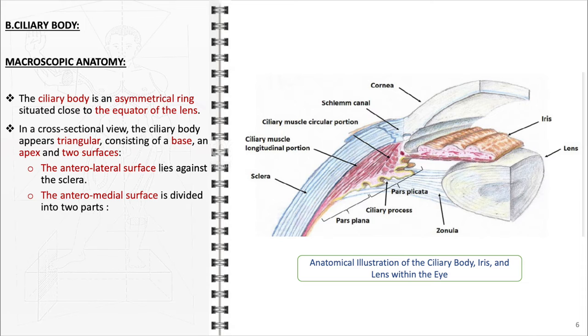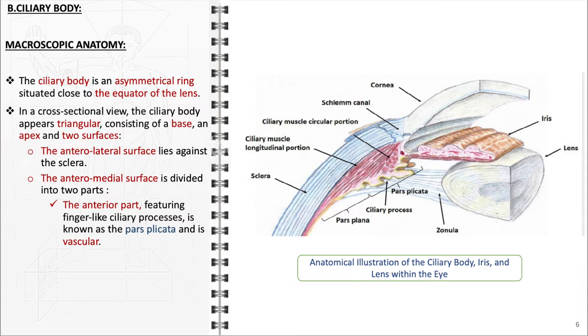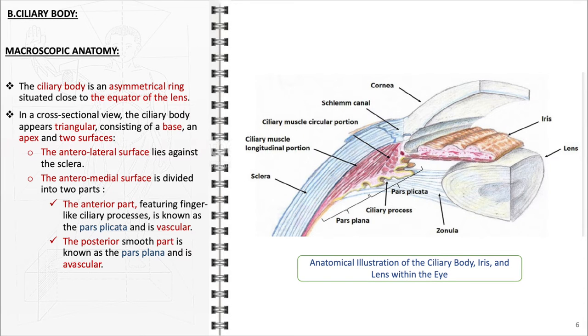The anteromedial surface is divided into an anterior section that contains the ciliary processes, known as the pars plicata, which is vascularized, and a posterior section, the pars plana, which is smooth and avascular.